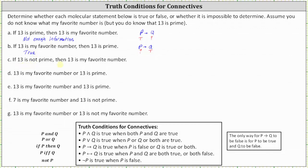For part C: If 13 is not prime, then 13 is my favorite number. Once again, we have an if-then statement in the form of if P then Q. Here, 13 is not prime is false, so P is false. We don't know whether Q is true or false. But looking at our notes, if P then Q is true when P is false, so because P is false, part C is a true statement.